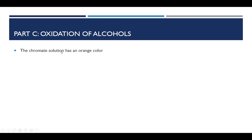The chromate solution has an orange color. Whenever it reacts with an alcohol, the chromate ion changes into the chromium 3+ ion, which is green. What you're looking for here is not a change in the alcohol but a change in the chromium reagent.